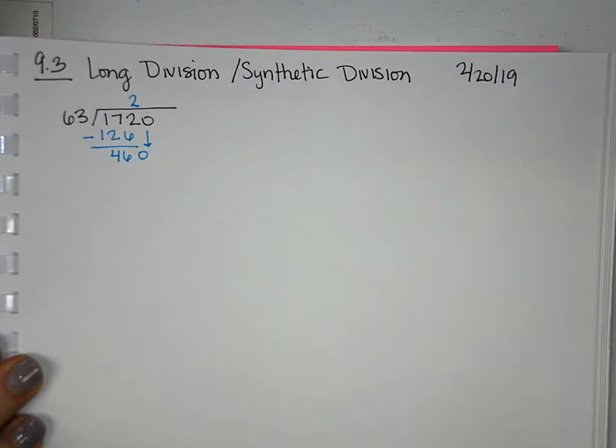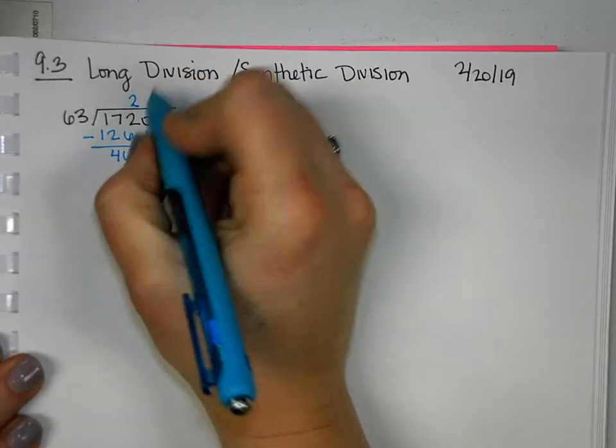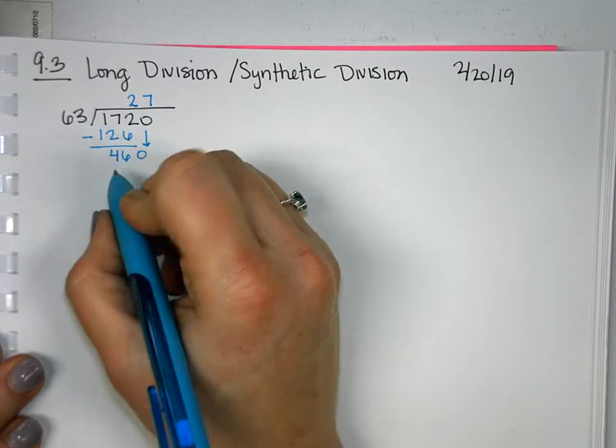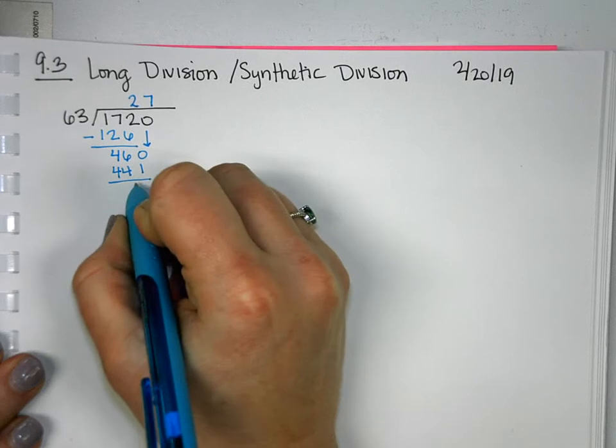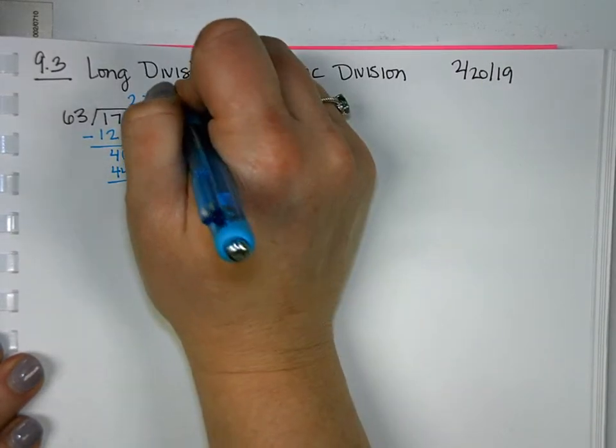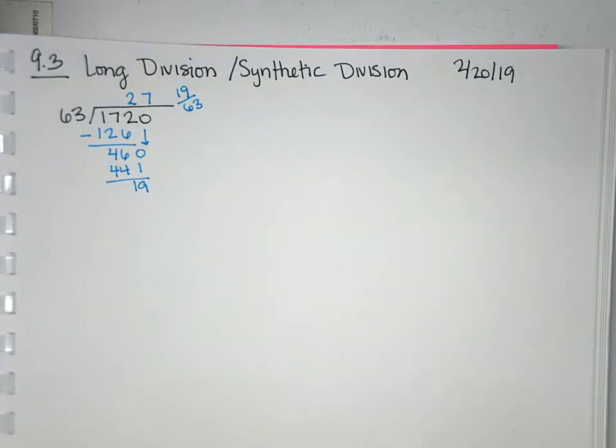And we went through that process again. How many times does 63 go into 460? It goes in 7 times. Multiply 7 times 63, we get 441. Remainder 19. There's nothing left, so we would say 19 over 63, or remainder 19.